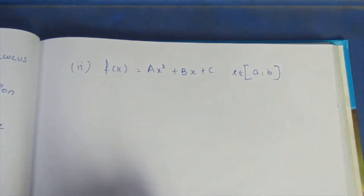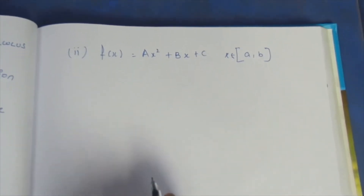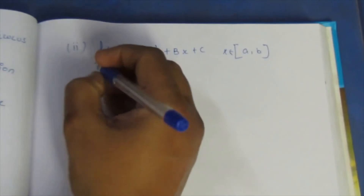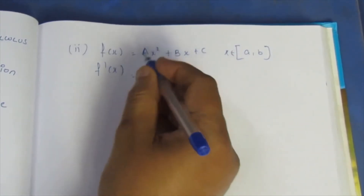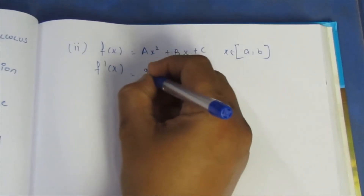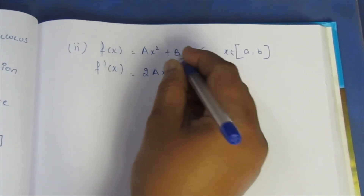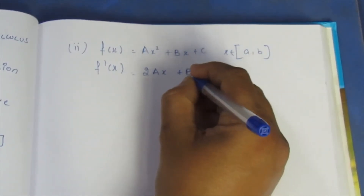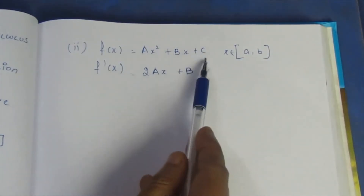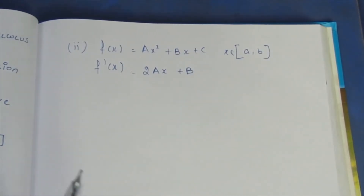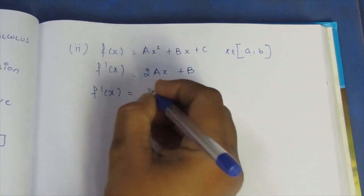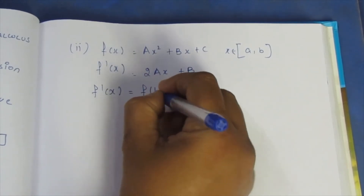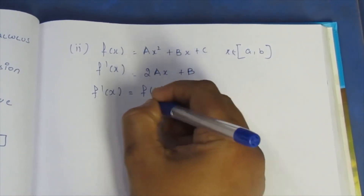First, differentiate f(x) = ax² + bx + c. Using the power rule, f'(x) = 2ax + b. The constant term c differentiates to 0. Now, according to the Mean Value Theorem formula, f'(x) = [f(b) - f(a)] / (b - a).